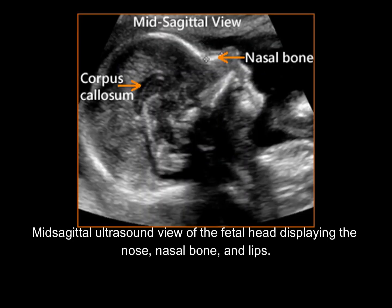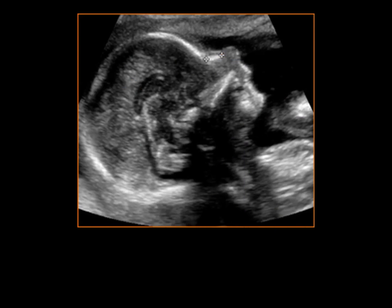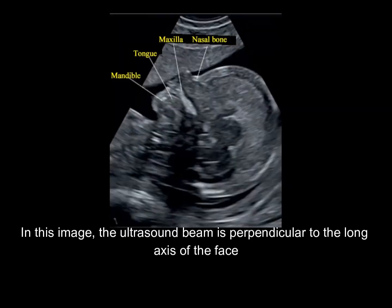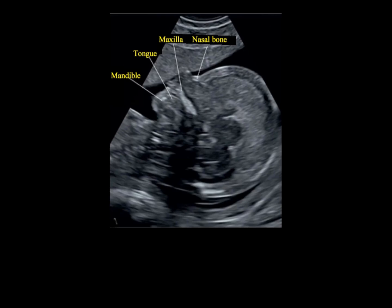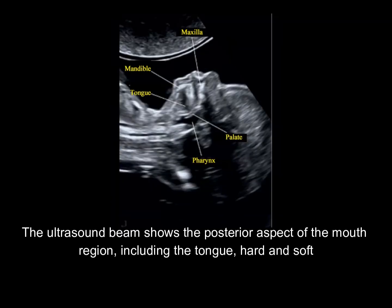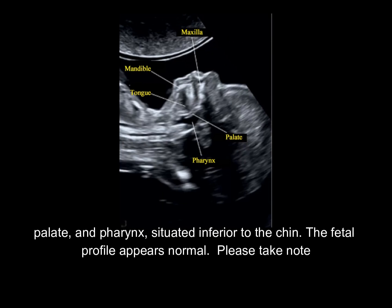Midsagittal ultrasound view of the fetal head displays the nose, nasal bone, and lips. In this image, the ultrasound beam is perpendicular to the long axis of the face and displays the nose with nasal bone, the maxilla, and the chin with the mandible. The ultrasound beam shows the posterior aspect of the mouth region, including the tongue, hard and soft palate, and pharynx, situated inferior to the chin.